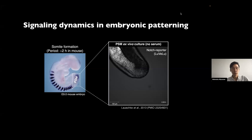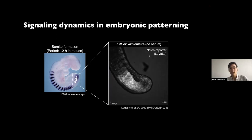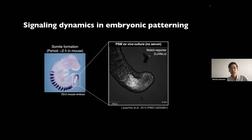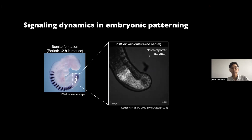Somites are segmented from a tissue called presomitic mesoderm, or PSM, in a periodic fashion. In the case of mouse embryos, every two hours a new somite is formed. This temporal periodicity is controlled by a molecular clock known as the segmentation clock, which comprises the Notch, FGF, and Wnt signaling pathways. In mice, Notch signaling activity is oscillating within PSM cells, with periodic activation of Notch happening every two hours, which corresponds to the timing of mouse segmentation.